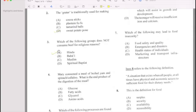Number 4: Mary consumed a meal of boiled yam and spinach canelo. What is the end product of the digestion of the meal?